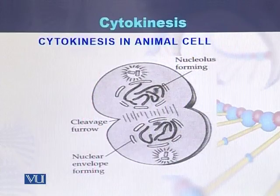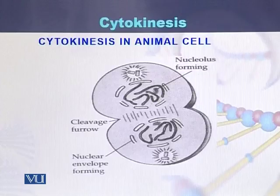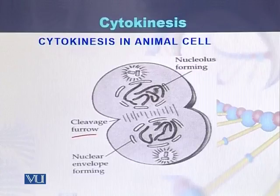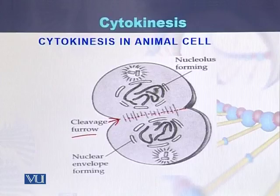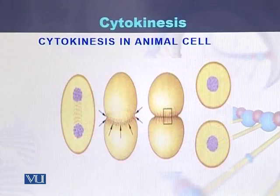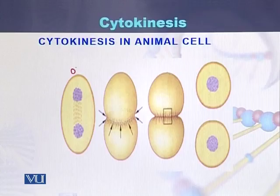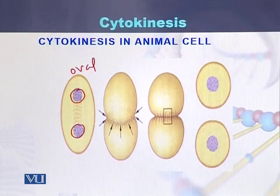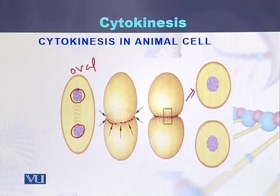In this diagram we can see how an animal cell is converted into two cells with the help of cytokinesis. In the middle there is a cleavage furrow, which pinches the cell membrane, and ultimately from this point the cell is converted into two daughter cells. In the second diagram, a single oval-shaped cell contains two nuclei, and there is a deep furrow in the membrane that converts the cell into two daughter cells.